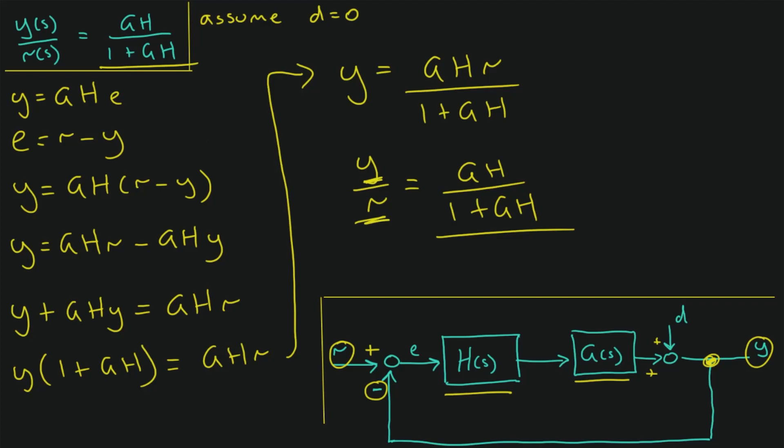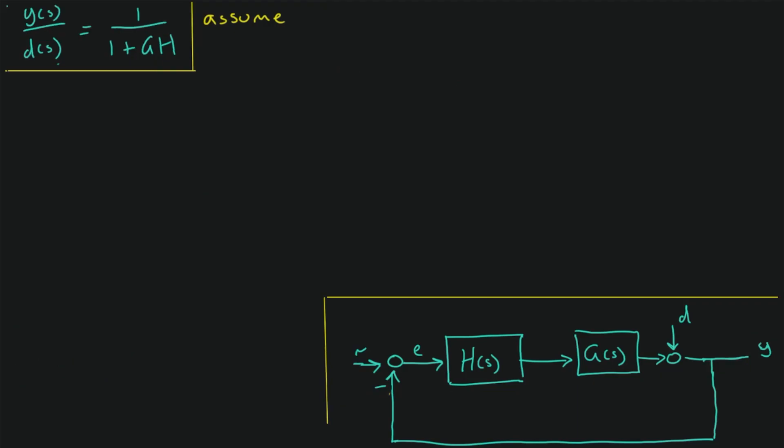Now we can start on the other one. For the second half of this question, we need to find the transfer function from the disturbance D to the output Y. So as we did last time, we want to assume our other inputs are zero. So assume R is equal to zero, which means this input here effectively isn't there.